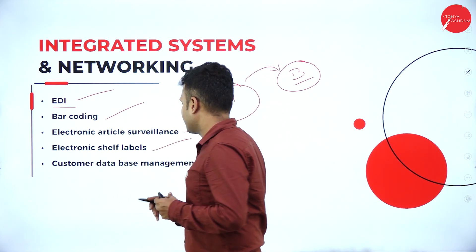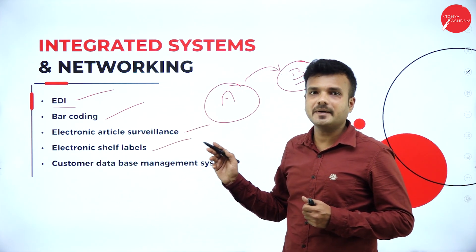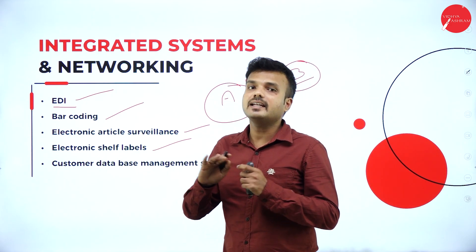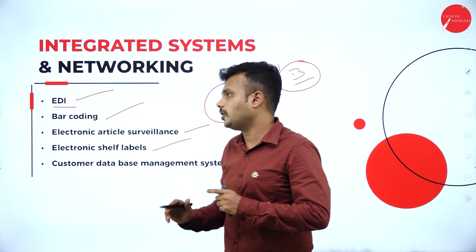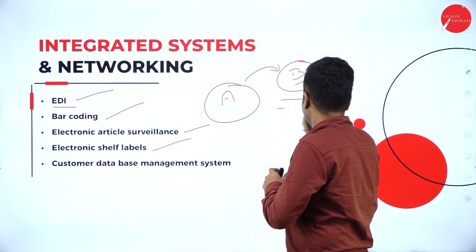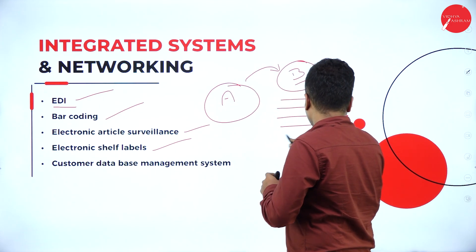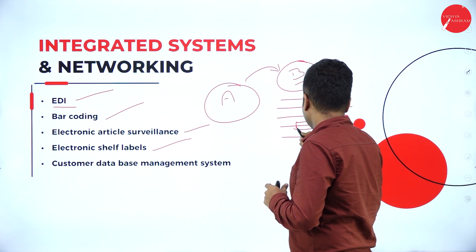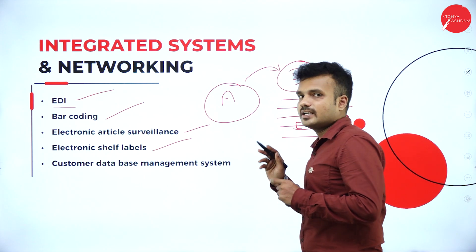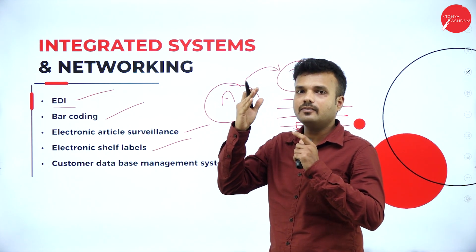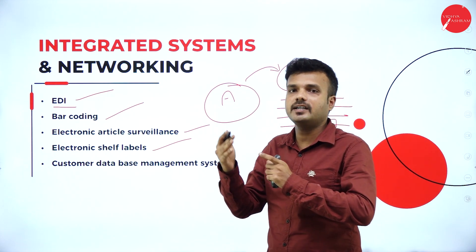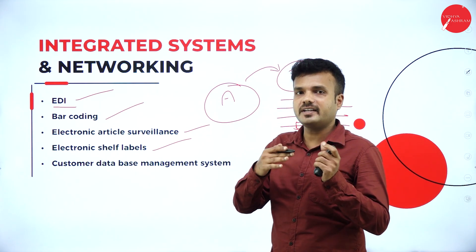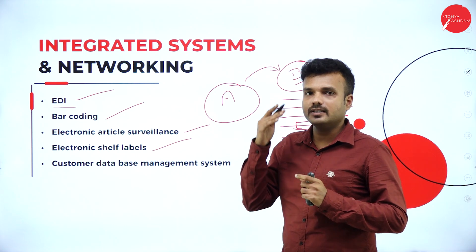Electronic Shelf Labels is a system adopted in foreign countries; India has not yet adopted it. It is a label placed on the shelf of the product — they arrange the product on a shelf and stick this automated label on it. In that label, all features of the product — price, quality, and quantity — are specified. It keeps on updating from time to time based on changes.